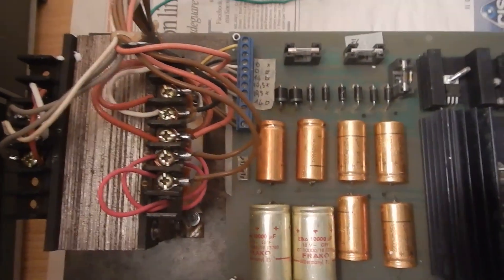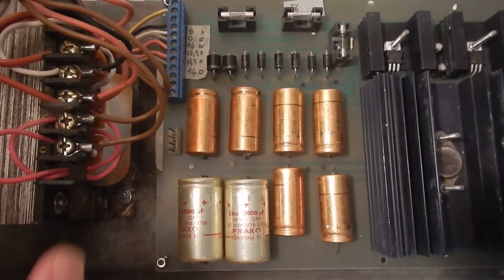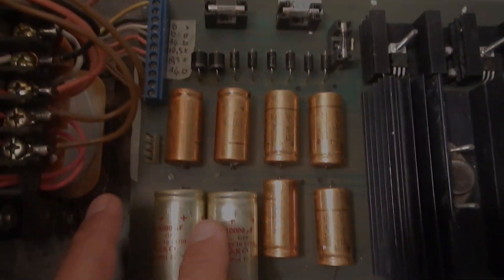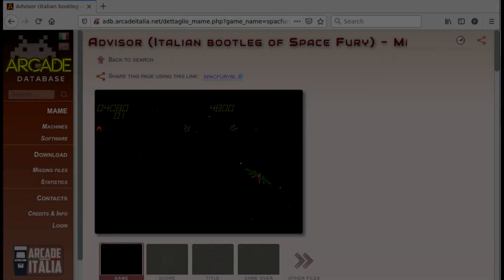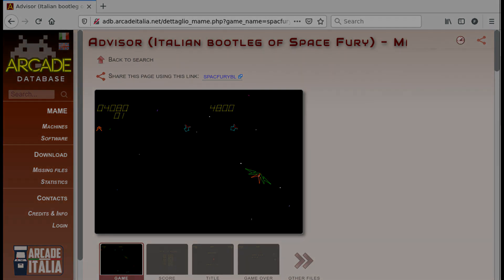Hi everybody, welcome to another IZ8 DWF repair video. This time I have on the bench an arcade power supply. The power supply belongs to an Advisor arcade cabinet, which is a bootleg of Space Fury, made in Italy by Rumiano Company.